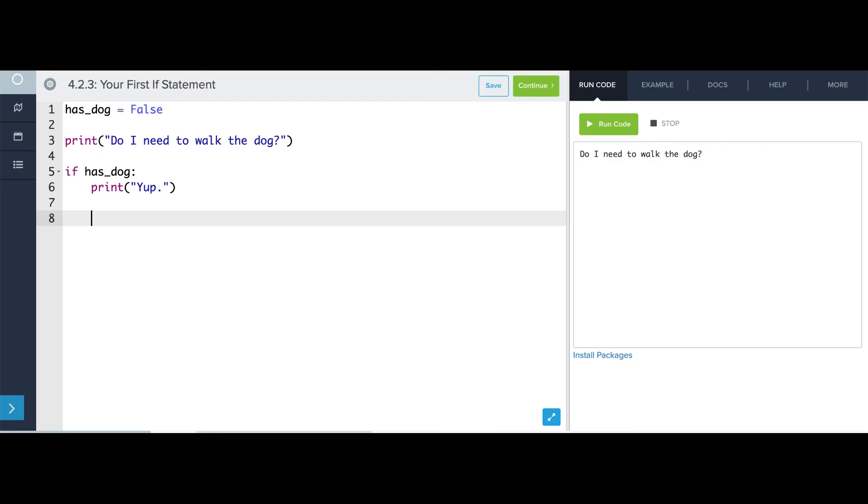So what we need to do is create an else branch. I'm going to say else, now this will only execute if it wasn't the case that I have a dog. So in this case, I'm going to say print nope, I don't have a dog. And now if I run this, it's going to say do I need to walk the dog, nope, I don't have a dog.